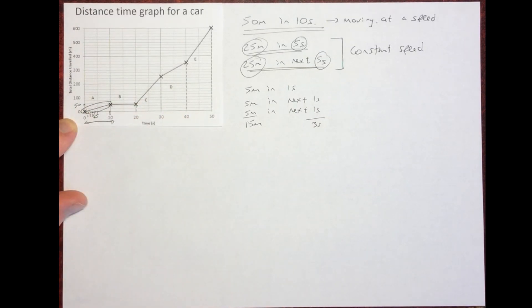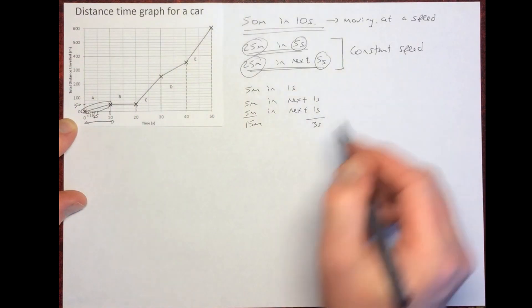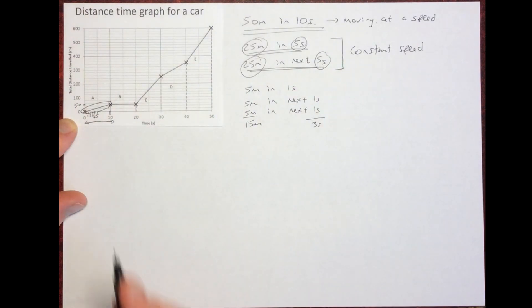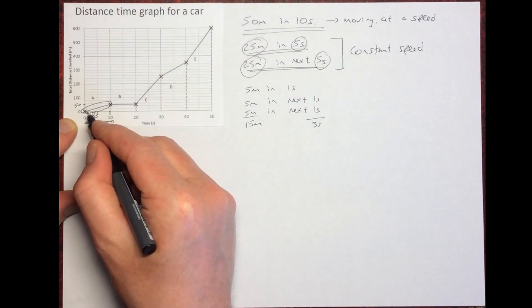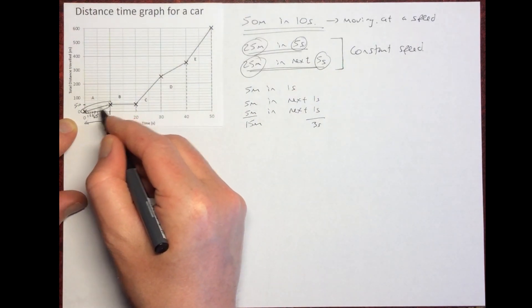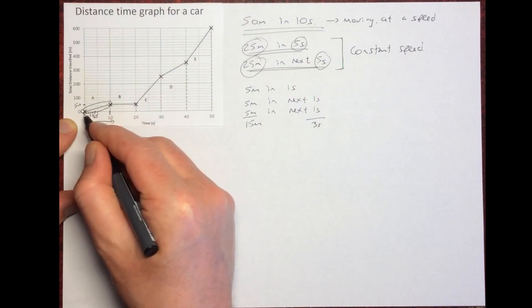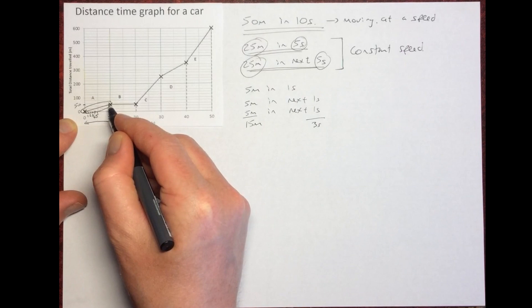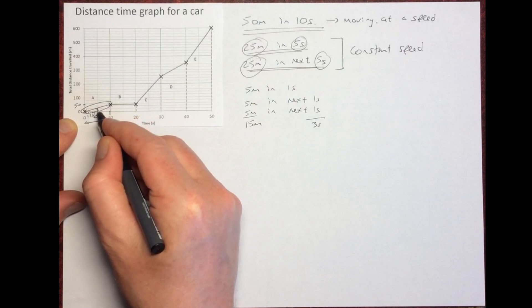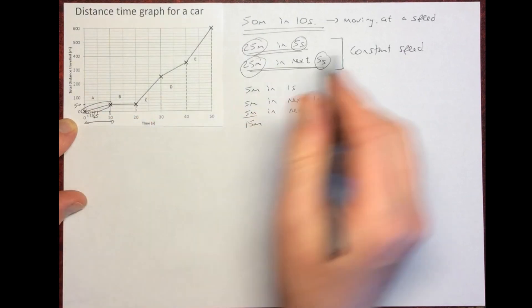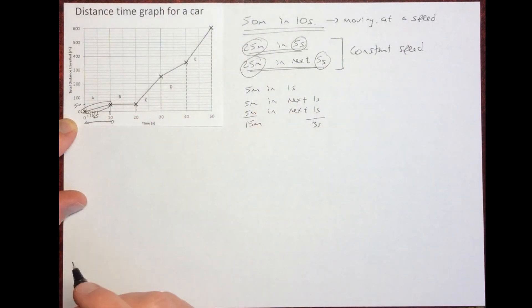Because the graph has a slope — a gradient going upwards — that tells us we are actually moving at a speed.